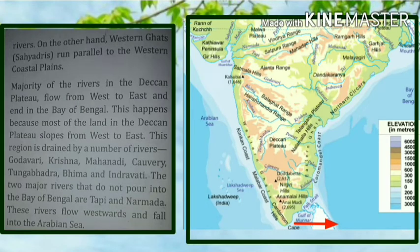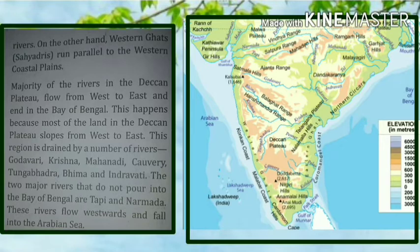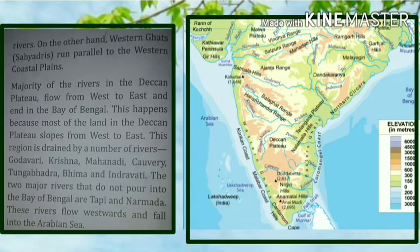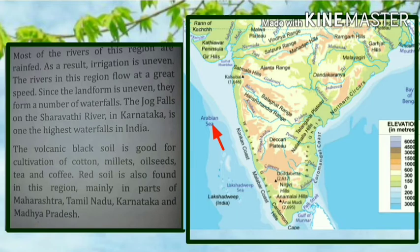Rivers flow from west to east and end in the Bay of Bengal because most of the land in the Deccan Plateau slopes from west to east. This region is drained by rivers like the Godavari, Krishna, Mahanadi, Kaveri, Tungabhadra, Bhima, and Indravati. However, the two major rivers that do not flow into the Bay of Bengal are the Tapi and the Narmada, because they flow westwards and fall into the Arabian Sea.